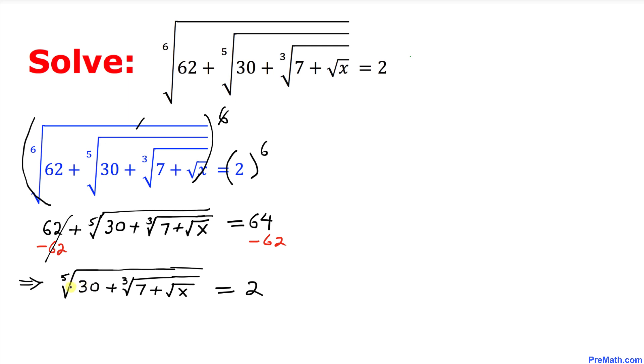And now since we are dealing with the fifth root of 30, let's take the power 5 on both sides. Let's do that one, fifth power, that means this power 5 and this fifth root they are gone.